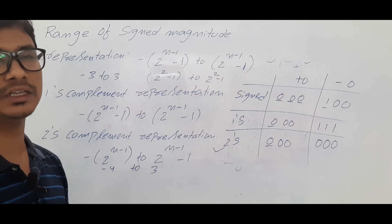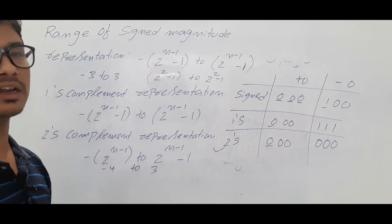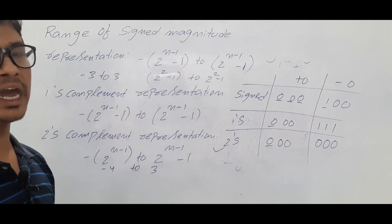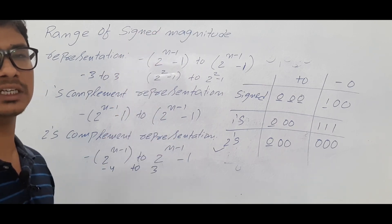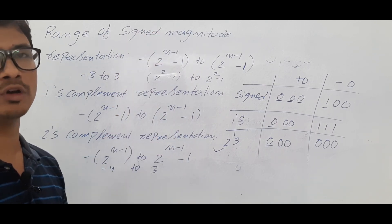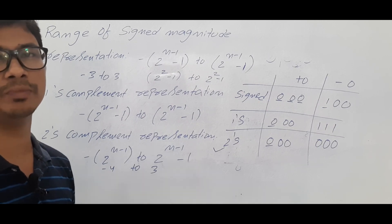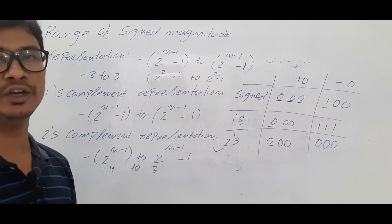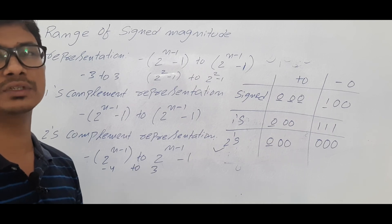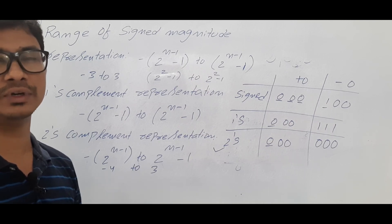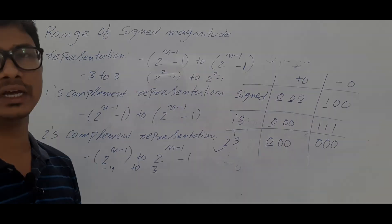I hope you have understood the range of sign magnitude, one's complement, and two's complement representations, and why we prefer two's complement for representing negative numbers. If you have any doubts, feel free to ask in the comments — I will clear your doubts in less than 24 hours. Thank you so much for watching, have a nice day.